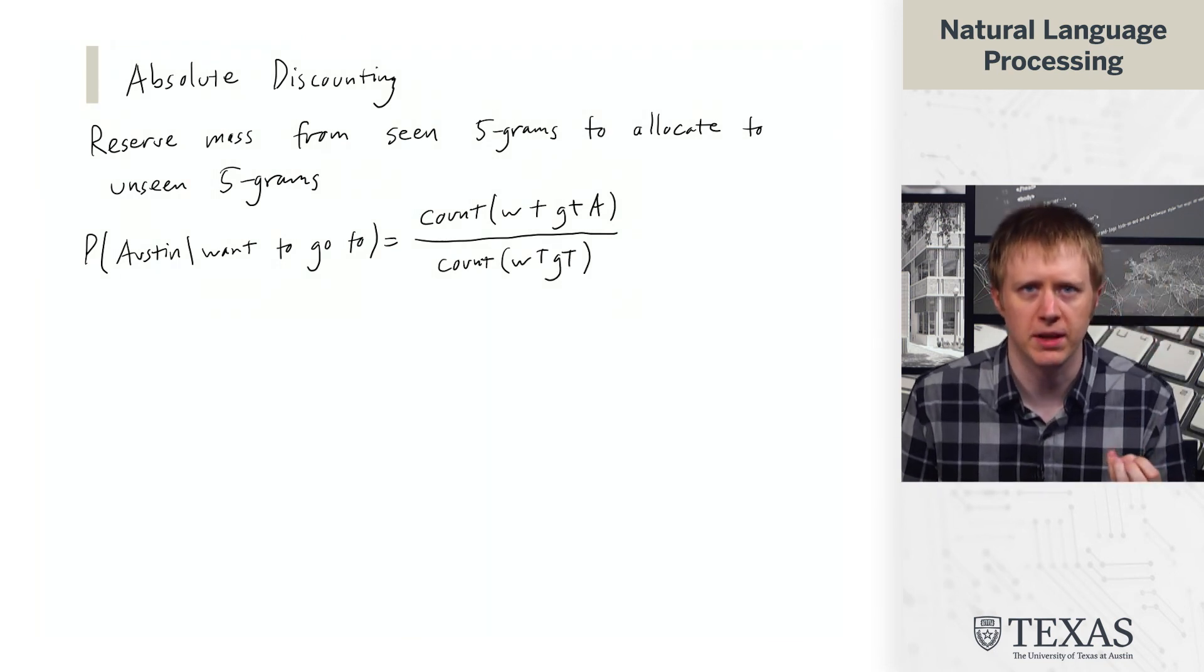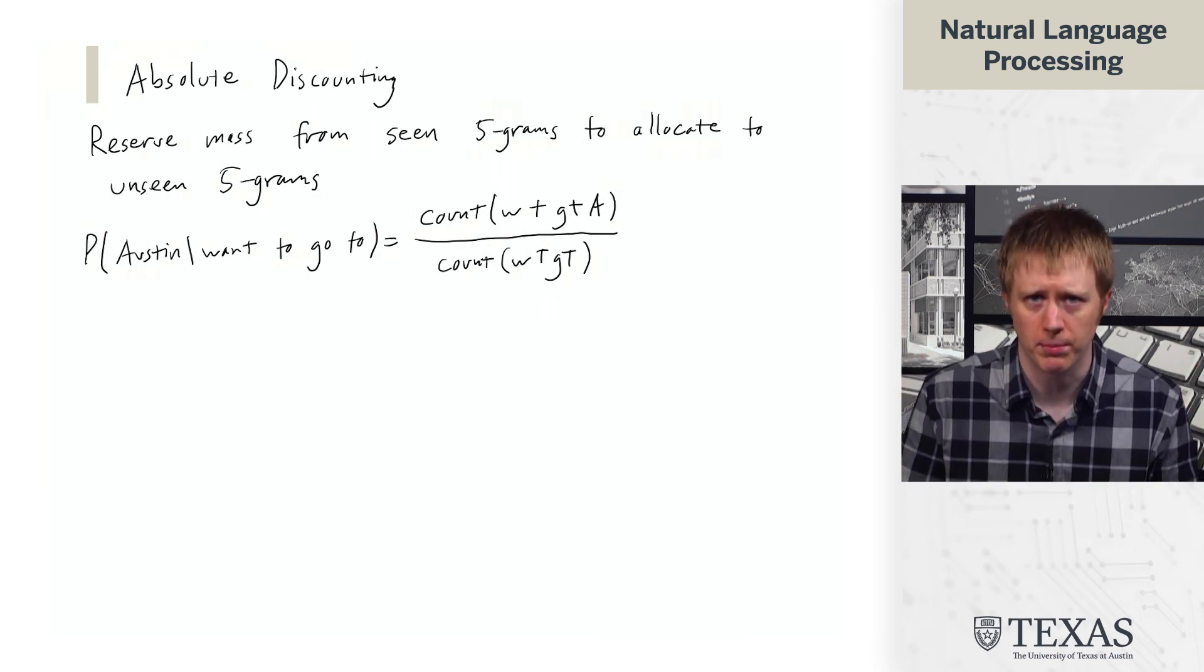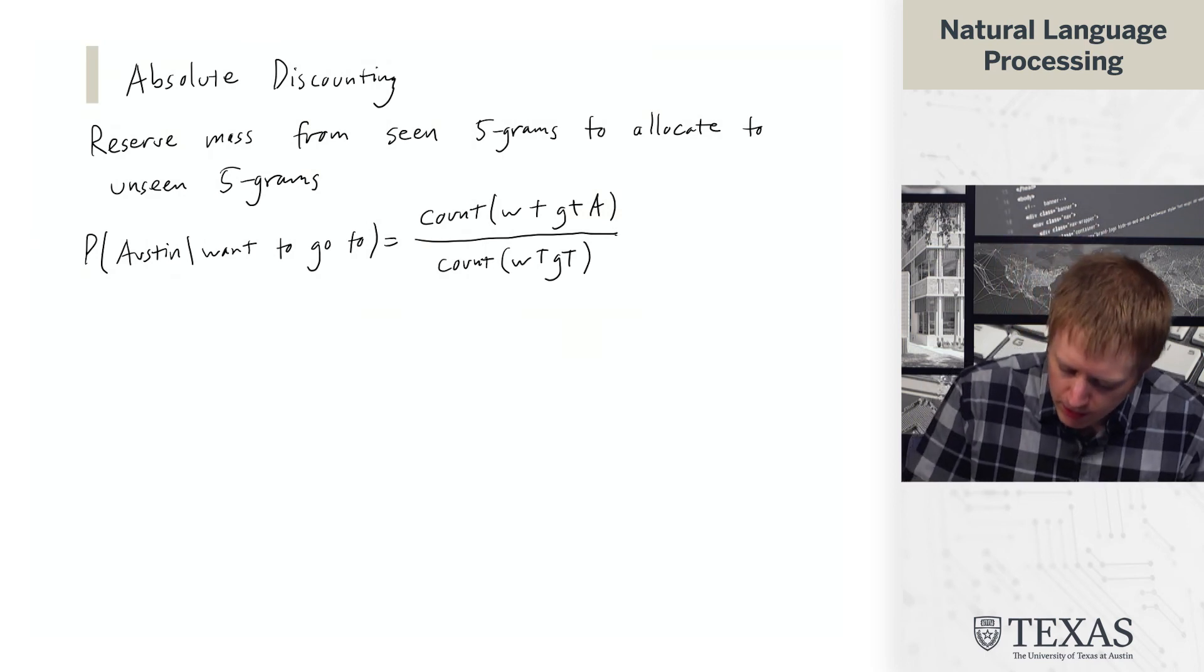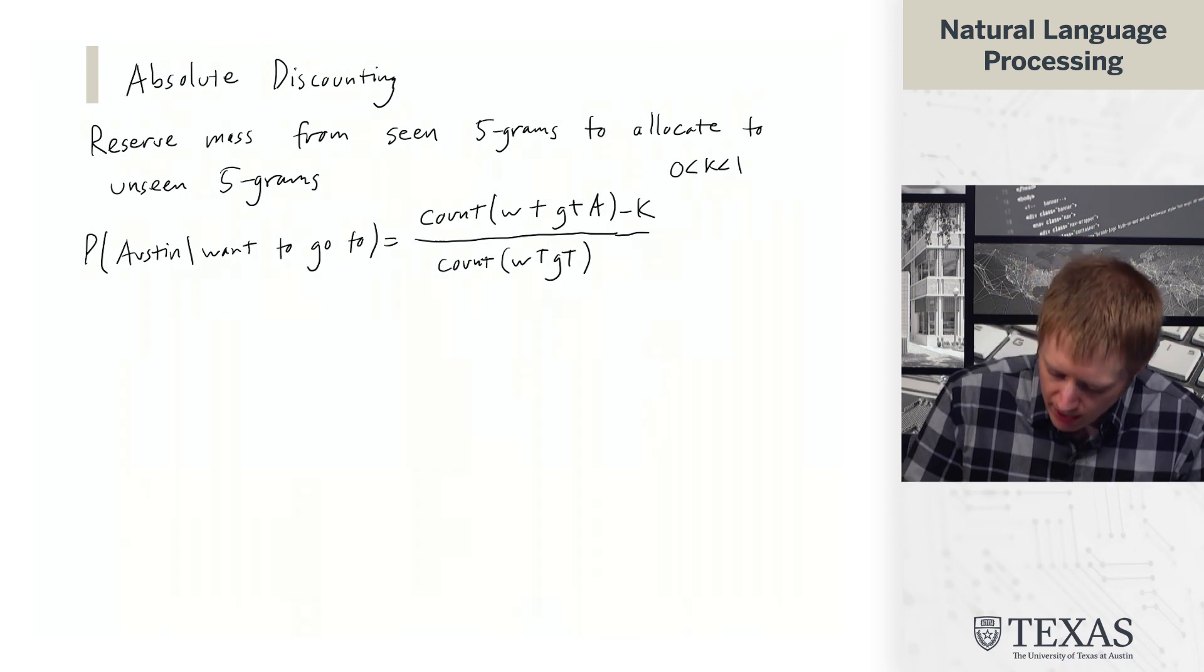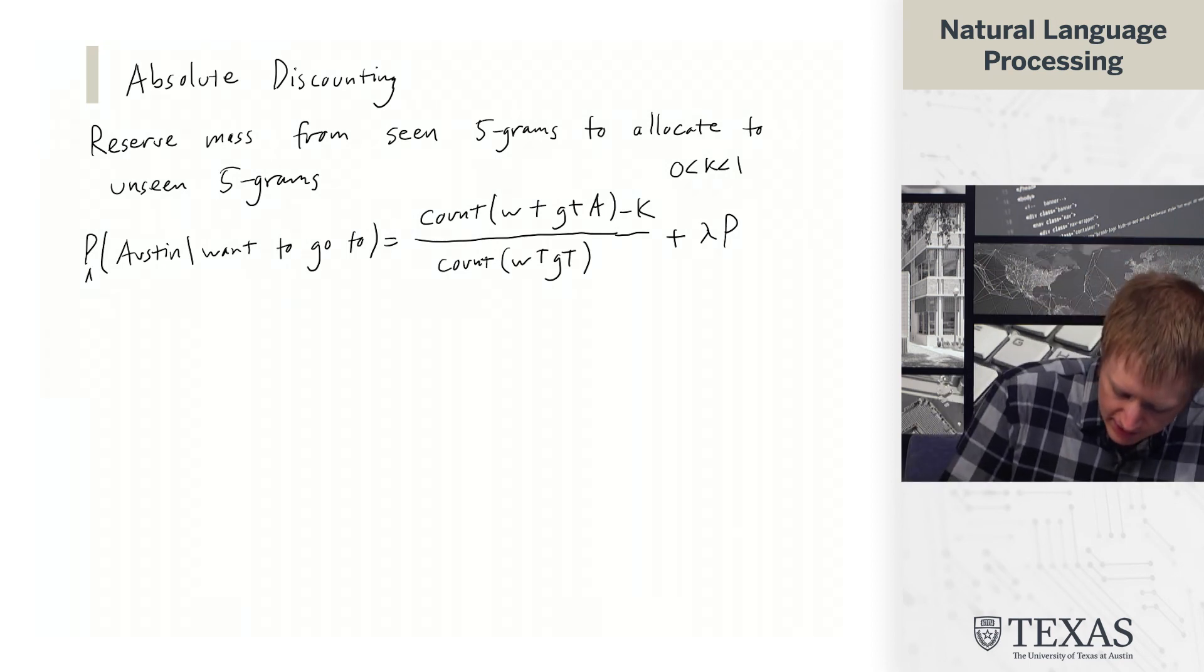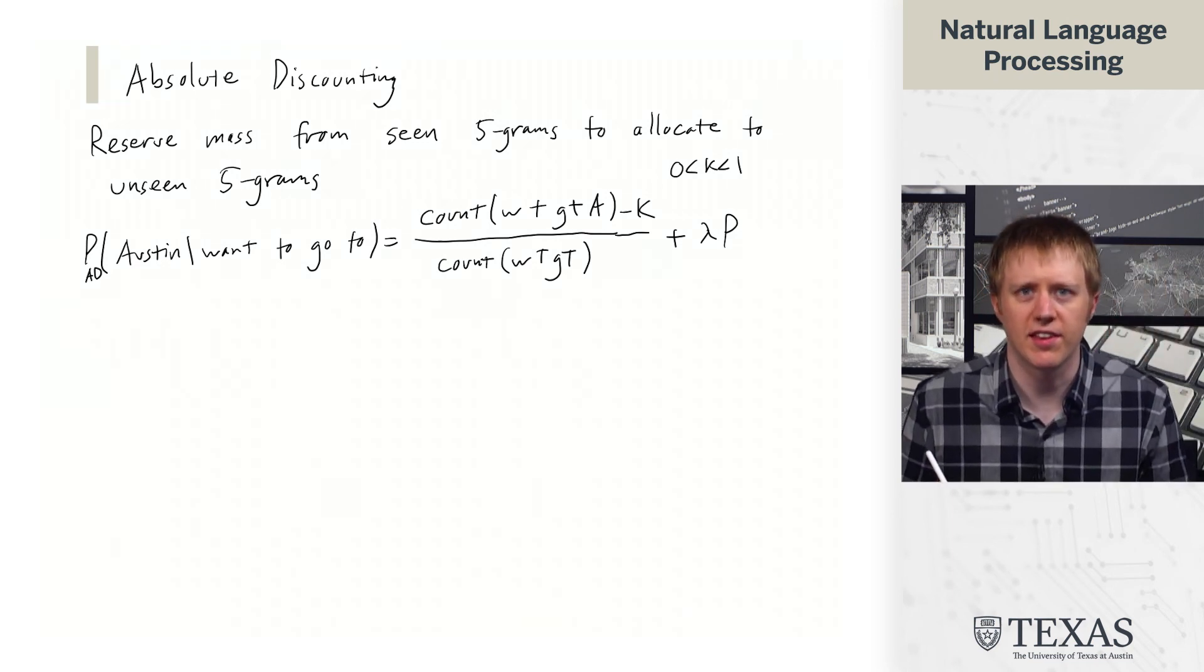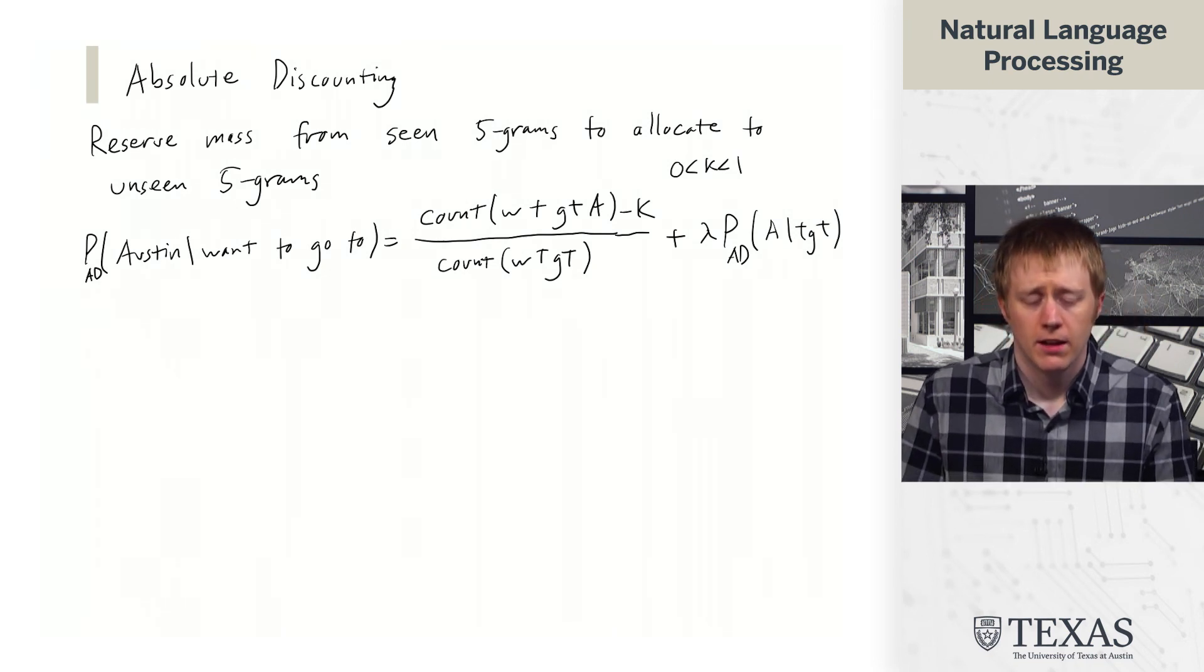So this is just the maximum likelihood estimate of the parameters here given the counts drawn from a big corpus. So what we are going to change here is we are going to subtract a constant k. And we're just going to say that 0 is less than k is less than 1 here. And then we're going to add lambda. So I'm going to write this as PAD to indicate that this is this absolute discounting distribution. Plus lambda times PAD of Austin given to go to.